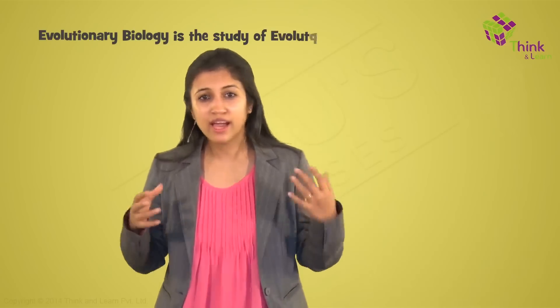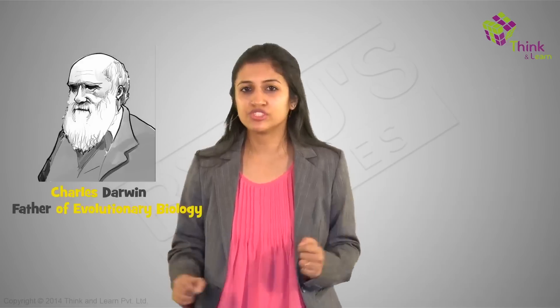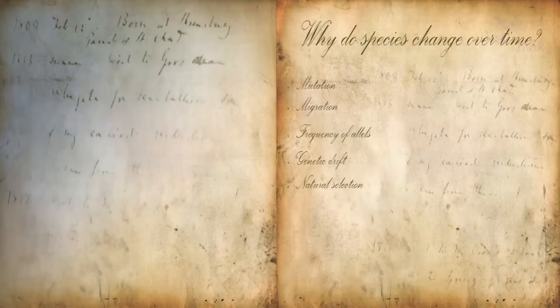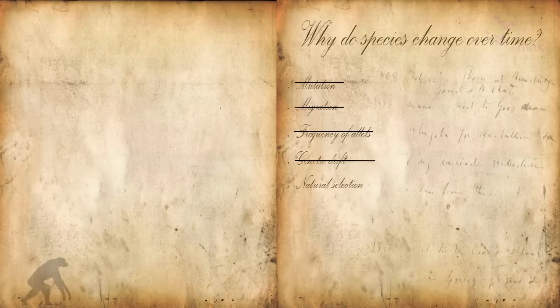So what is evolution? Evolution is the process of change in all forms of life over generations, and evolutionary biology is the study of how evolution actually happens. You might have heard of Charles Darwin — he is credited as being the father of evolutionary biology and the author of the very famous book, The Origin of Species. A lot of theories explain why species change over time, including mutation, migration, random changes in allele frequency, and genetic drift, but natural selection by far explains the most common and most powerful reason for evolutionary change.